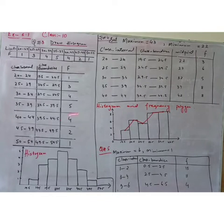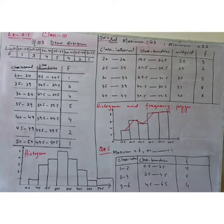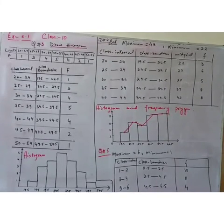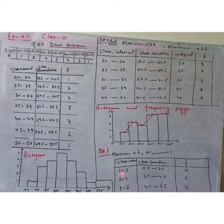Question number 5: a teacher asks students their time spent on homework completion. The following data was obtained — time in hours — with values 4, 4, 6, 3, 1, 2, 2, and other numbers up to 6. We construct a frequency table and draw the histogram. Maximum value is 6 and minimum is 1. Class intervals are 1 to 2, 3 to 4, and 5 to 6. Corresponding frequencies are: 15 numbers for 1–2, 11 for 3–4, and 4 for 5–6.